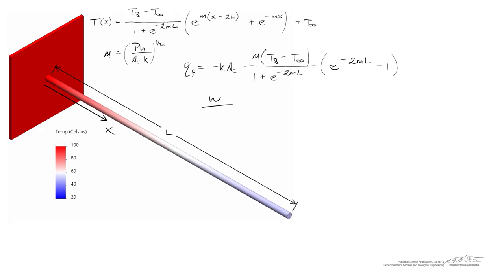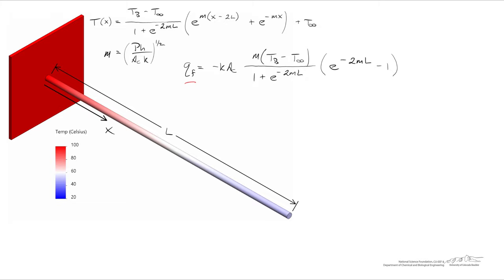Let's check the units. Thermal conductivity has units of watts per meter-Kelvin, cross-sectional area is meters squared, the fin parameter m has dimensions of one over meters so the meters cancel, and the temperature has dimensions of Kelvin — leaving us with units of watts. As an engineer, this is the parameter you're designing around: figuring out how much heat is being removed from the object you're trying to keep cool.